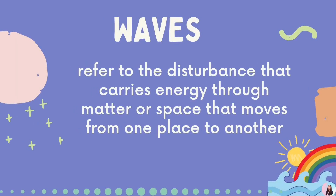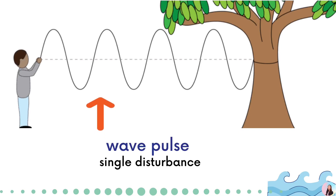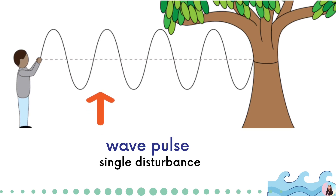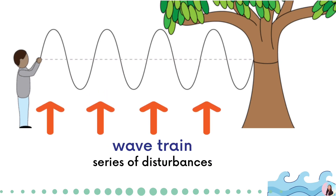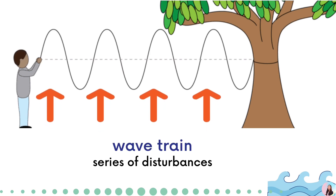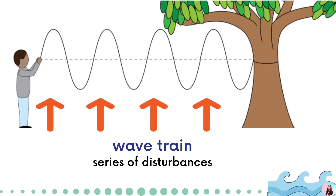Waves refer to the disturbance that carries energy through matter or space that moves from one place to another. If you tie one end of a rope around a tree and jerk the other end once, a disturbance will travel along the rope and a wave pulse will be produced. A wave pulse is a single disturbance, while a wave train is a series of disturbances.